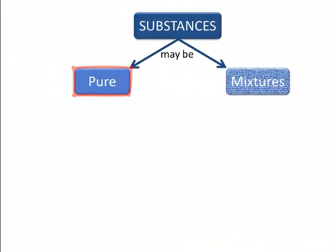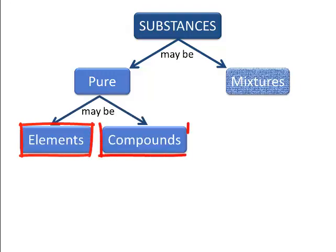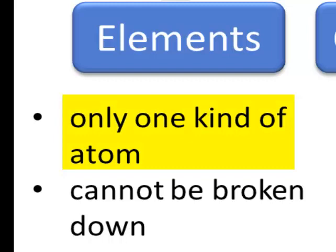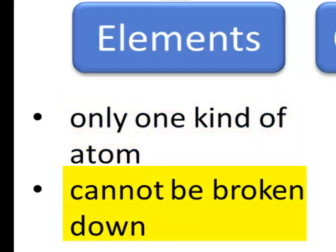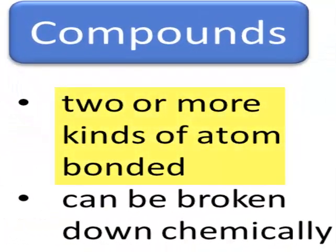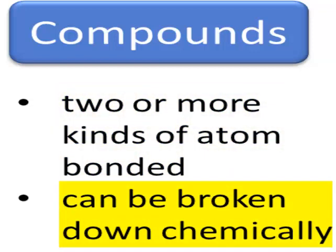There are two kinds of pure substance: elements and compounds. In elements there's only one kind of atom all throughout the whole substance, and we can't break an element down at all, not even by breaking bonds, because an element is the simplest kind of substance you get. A compound consists of two or more kinds of atom bonded together and it can be broken down, but only chemically, only by breaking bonds.